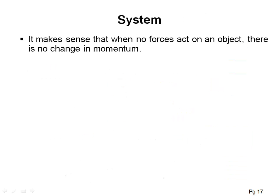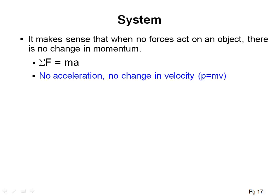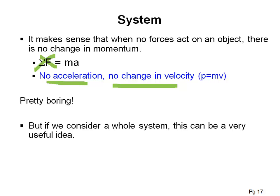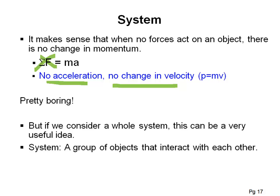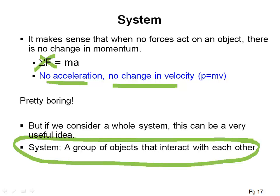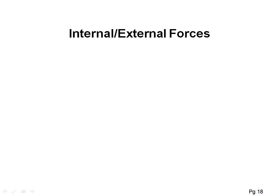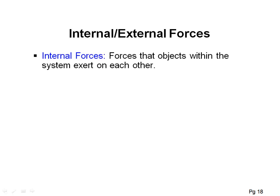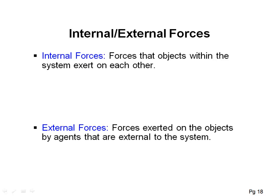This makes sense: when no forces act on an object, there is no change in momentum. For a single object that's pretty boring — no acceleration, no change in velocity. However, if we consider a whole system — a group of objects that interact with each other, like billiard balls or air molecules — this becomes very useful. For a system, we define two kinds of forces: internal forces, exerted by objects within the system on each other, and external forces, exerted by agents outside the system.